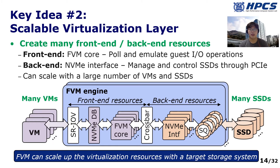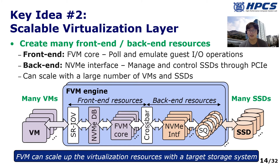FVM achieves high scalability by executing virtualization on FVM engine. Our FVM engine implementation has two parts. The front-end implementation includes FVM cores, which emulate virtual devices by interacting with virtual machines. The back-end implementation has many NVMe interfaces that directly manage the physical NVMe devices, maximizing VM scalability by instantiating many front-end resources. FVM also scales with the target backend storage system by instantiating many NVMe interfaces, replacing the fixed number of general-purpose side cores with a large number of customized hardware units.